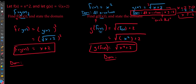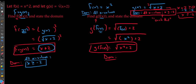Now we discuss the domain of f(g(x)). Although the simplified expression x + 2 has no radical, the inner function g(x) had a restricted domain of x ≥ −2. Since f(g(x)) can only exist where g(x) exists, the domain of the composition is all x such that x ≥ −2, not all real numbers.